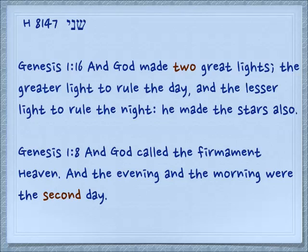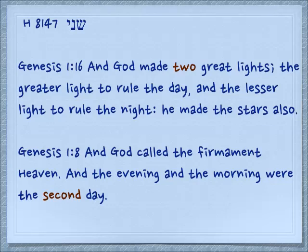Now, this is the root Shen where the word 'two' comes from, and it's interesting because after all we do get two sets of teeth. In Genesis 1:16 — 'And God made two great lights: the greater light to rule the day and the lesser light to rule the night. He made the stars also.'